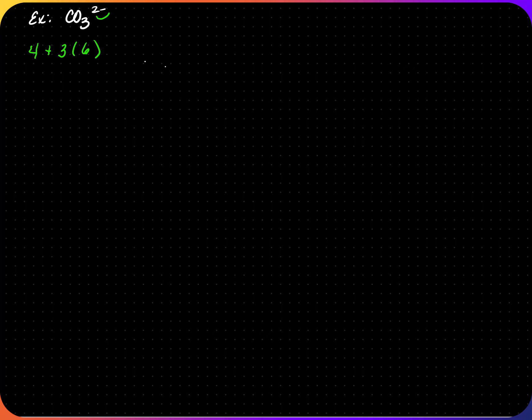Here we have CO₃²⁻, the carbonate ion. Pause the video and draw the Lewis dot structure. Carbon has four electrons. There are three oxygens, each with six electrons. Since it's an anion, we need to add the two extra electrons, giving us 24 total. The least electronegative atom goes in the middle as the central atom, with the oxygens spread outside.